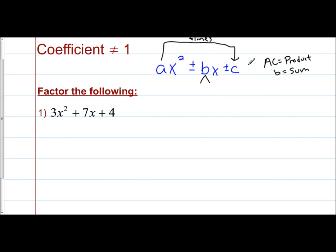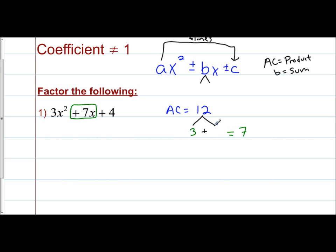Looking at ax² ± bx ± c: our a is 3 and our c is 4, so a times c is 12. The idea is 12 is your product, and you want two numbers that multiply to give you 12. You want two factors of 12 that add up to give you your sum, and my sum is positive 7. So I want two numbers that multiply to give me 12 but add to give me 7. Those numbers are 3 and 4 — 3 times 4 is 12 and 3 plus 4 is 7.